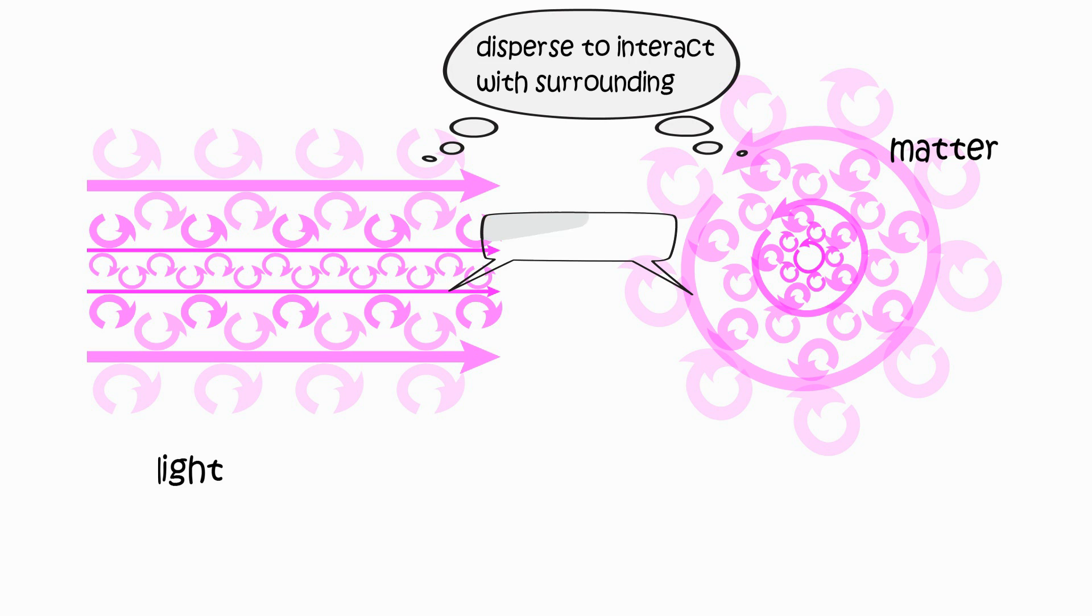Light is configured field momentum, synchronized to be straight instead of circles. Light is constantly recreated along the path it travels, dispersing and focusing field momentum simultaneously.